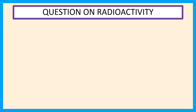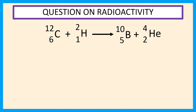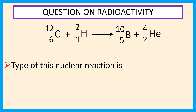Welcome everyone. Question on radioactivity: nuclear reaction 6C12 plus 1H2 gives 5B10 plus 2He4. The type of this nuclear reaction is?